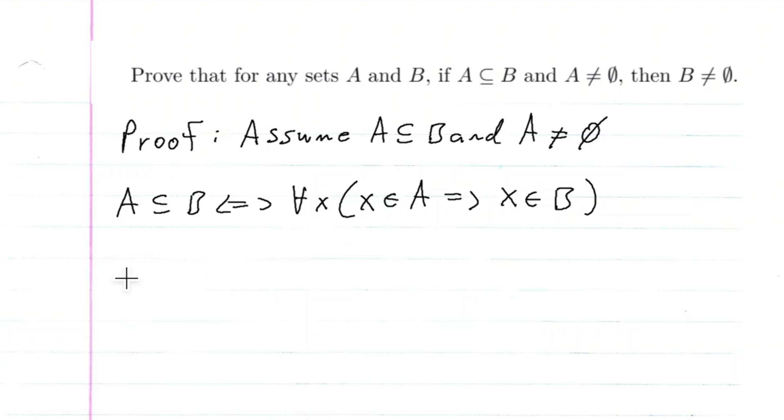Okay, so we also know that A is not equal to the empty set. So what this implies is there exists an X_0 in A. Does that make sense? Since it's not empty, then there must be an X in A.